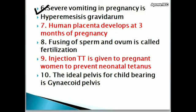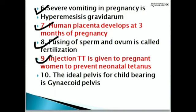Human placenta develops at 3 months of pregnancy. Fusing of sperm and ovum is called fertilization. Injection TT is given to pregnant women to prevent neonatal tetanus.